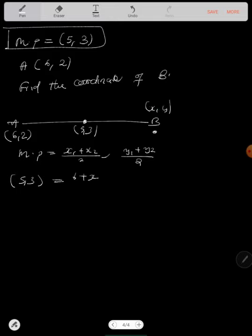Okay, so that's over 2 comma, Y1 is 2 plus, let's call it Y, over 2.